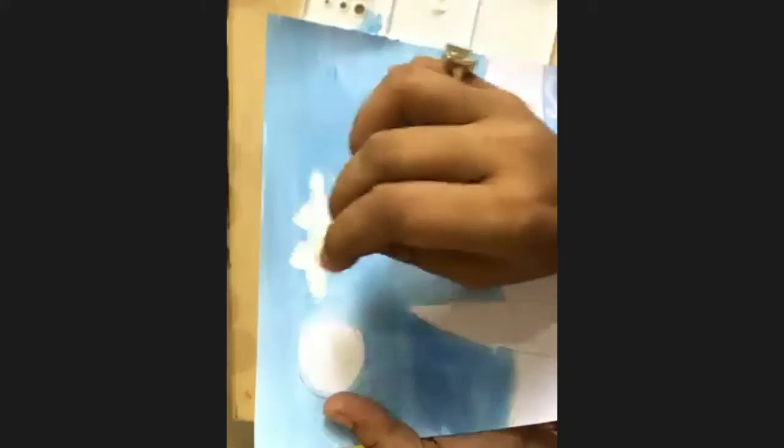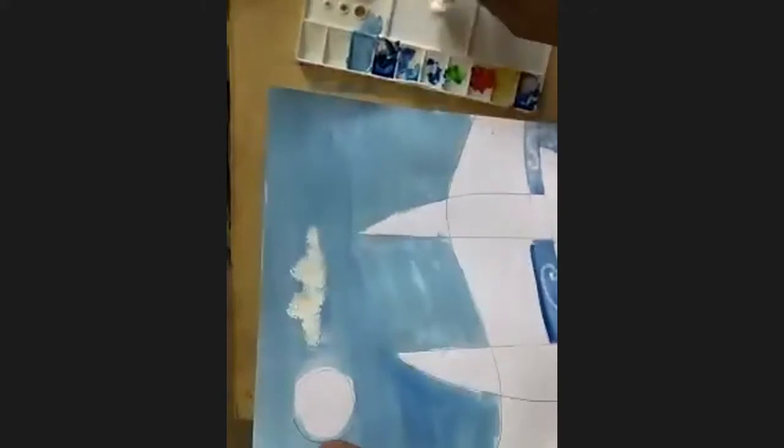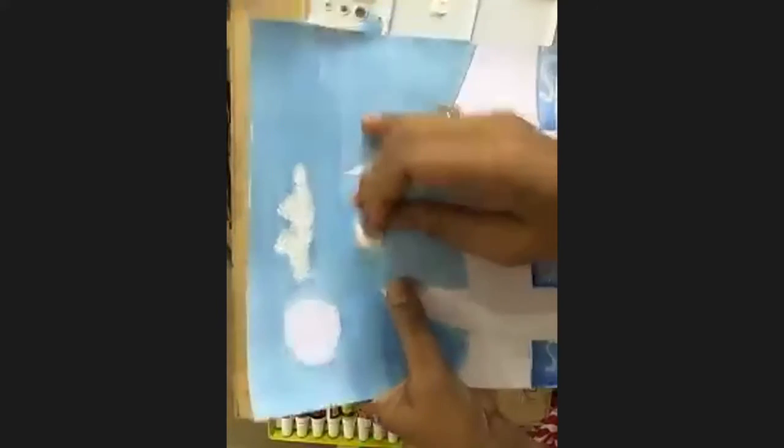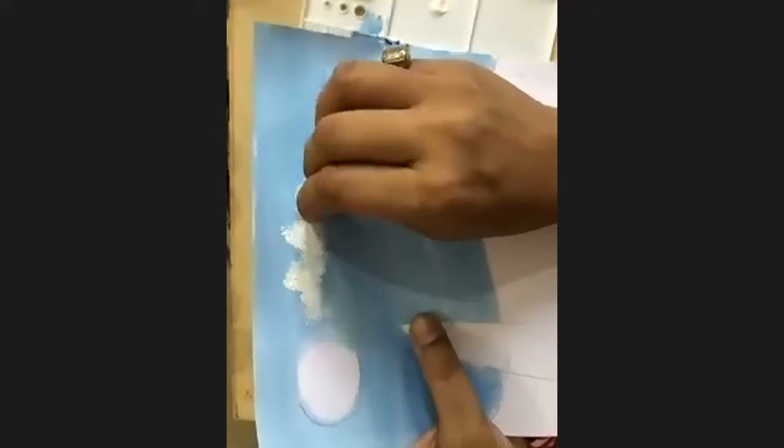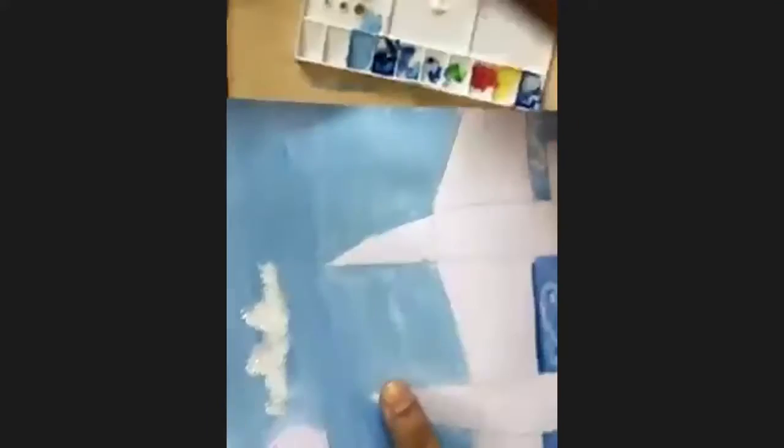Okay, you just have to dab. Don't paint it like this. Dab, dab, dab like this. We will make two, three clouds. One in the center. The center one I have made now. See, like this. You just have to touch it and come up. Touch and come up. Do not do like this. Okay? It's not a brush.